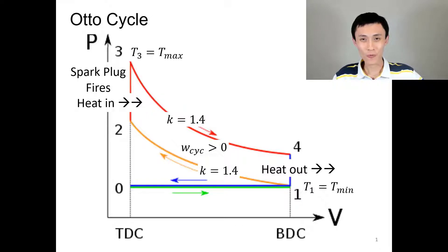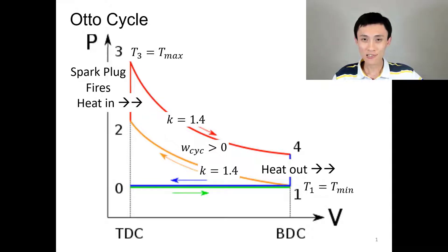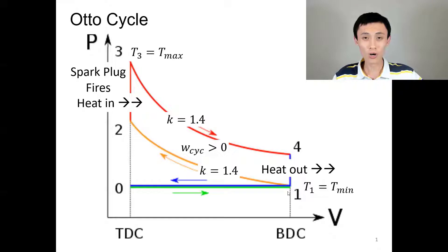For the Otto cycle, we focus on four processes: 1→2, 2→3, 3→4, and 4→1. Processes 1→2 and 3→4 are isentropic, meaning entropy does not change; since they are isentropic, they are also adiabatic — no heat transfer. Processes 2→3 and 4→1 are isochoric, meaning volume doesn't change, so work is zero. We will analyze heat transfer, work, and the whole cycle.